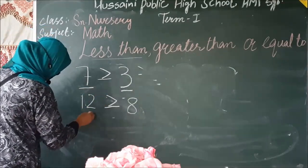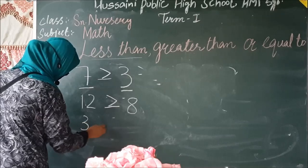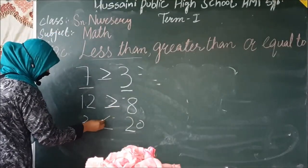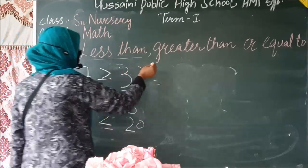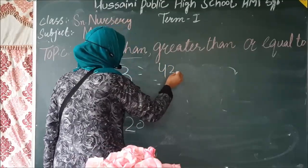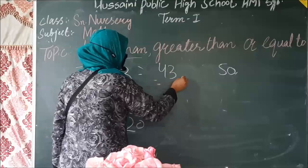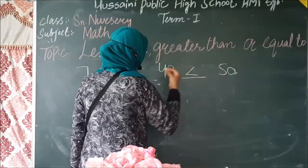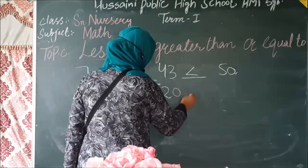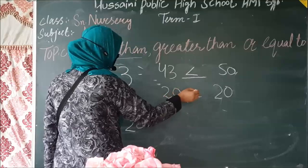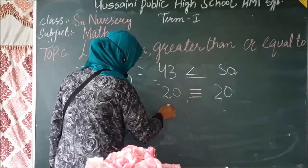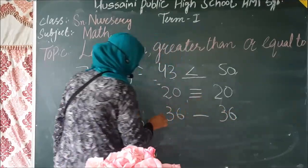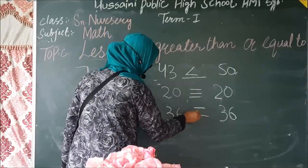Three और twenty — three जो है ये twenty से छोटा है, तो three is less than twenty। Forty-three और fifty — forty-three जो है ये fifty से छोटा है, तो forty-three is less than fifty। Twenty और twenty — ये दोनों numbers बराबर हैं, तो equal to की sign लगाएंगे। Thirty-six और thirty-six — ये दो numbers भी बराबर हैं, तो equal to की sign लगाएंगे।